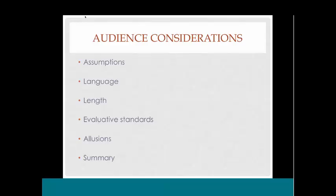Another audience consideration is how much summary to include. If a movie is based on a book — like The Dead by James Joyce — how much do I have to explain the plot? To certain audiences, quite a lot; to others, just the highlights. Summary is not an easy skill. Even when I ask students to summarize my comments at the end of their papers, what I thought I said isn't exactly what comes through. But in any event, it's an important skill that is built into a movie review.